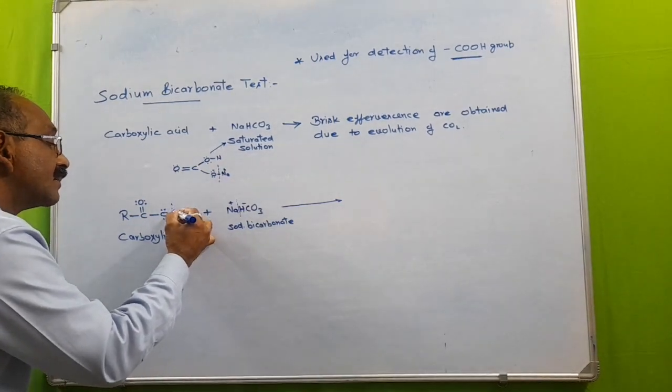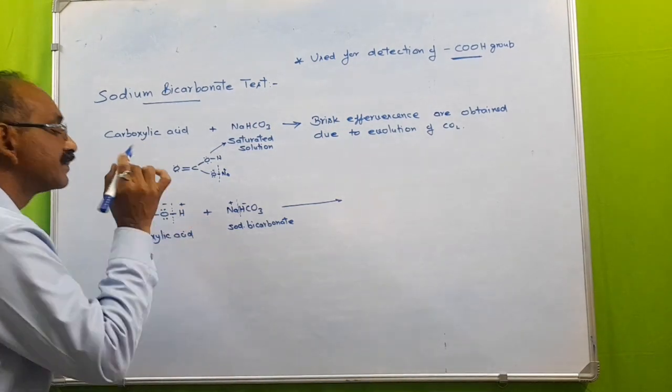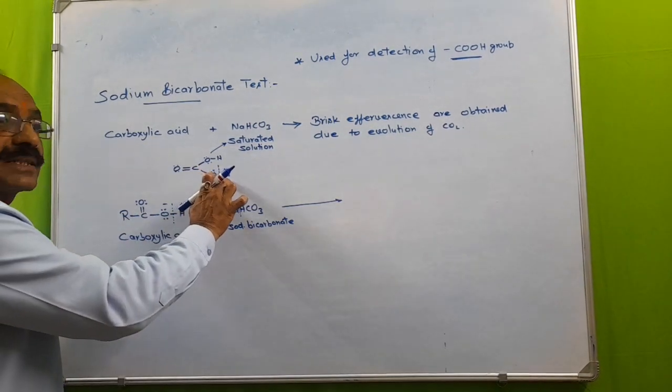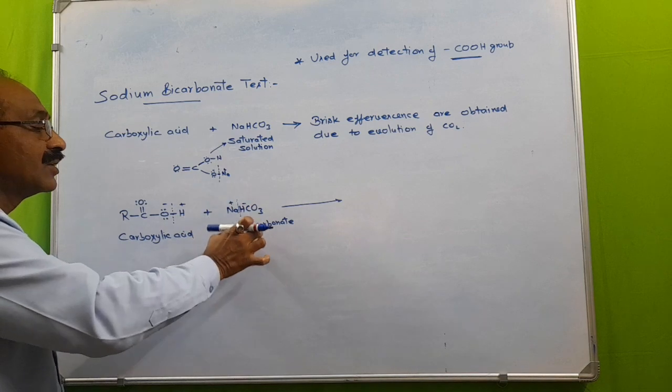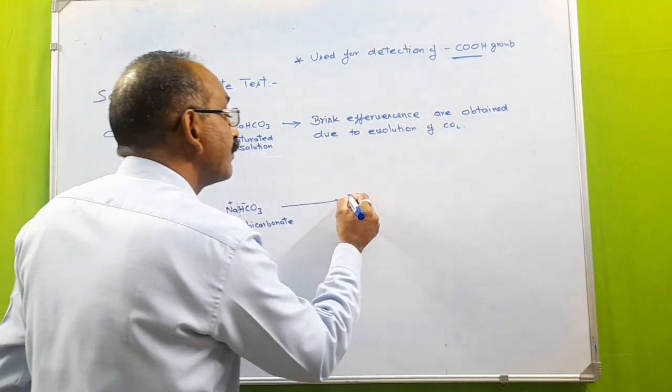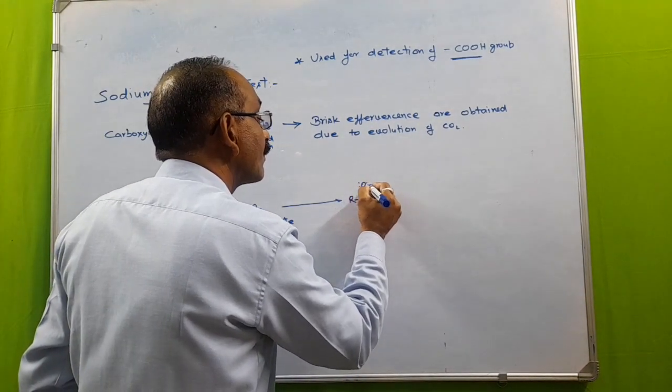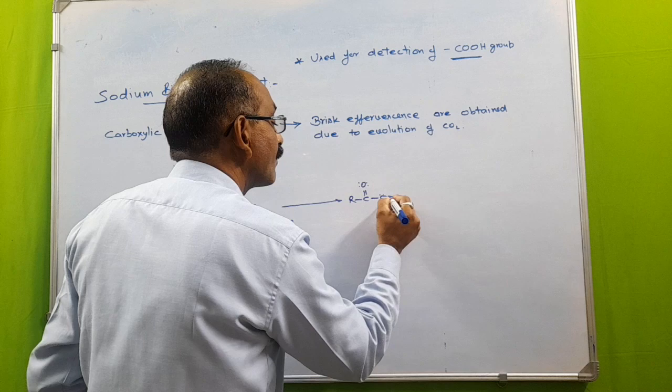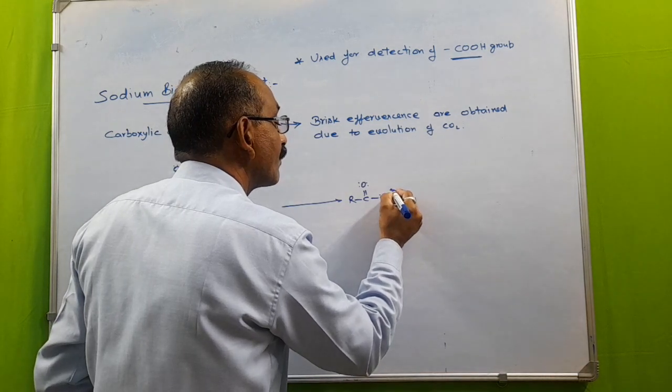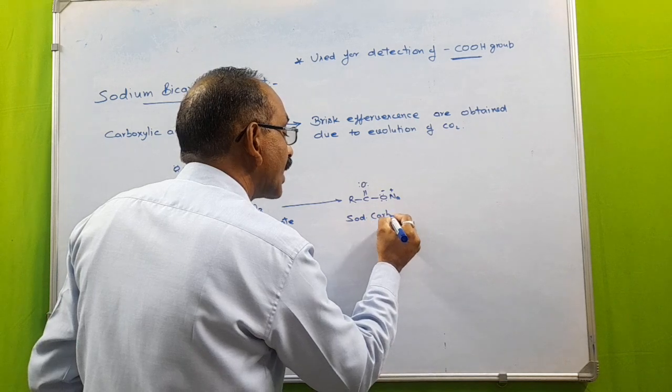Here in carboxylic acid, as it is acidic, it will furnish H+ ion. So now the Na+ ion furnished from the sodium bicarbonate combines with the carboxylate ion and we obtain sodium carboxylate.